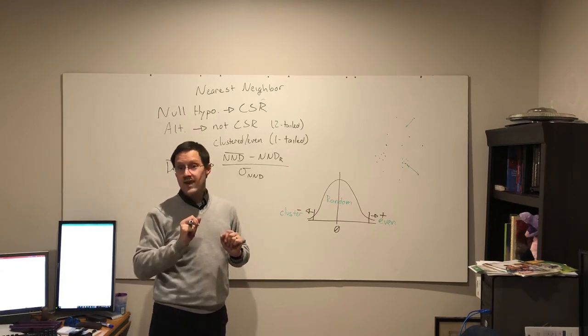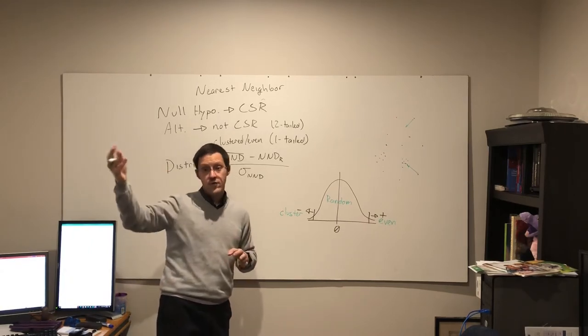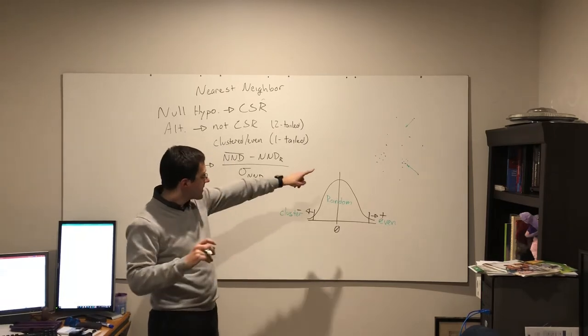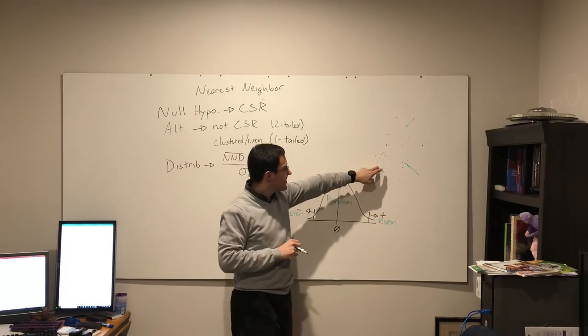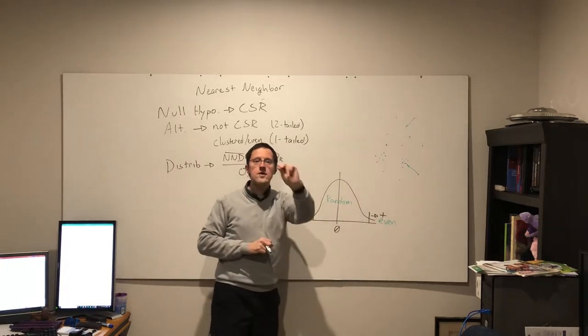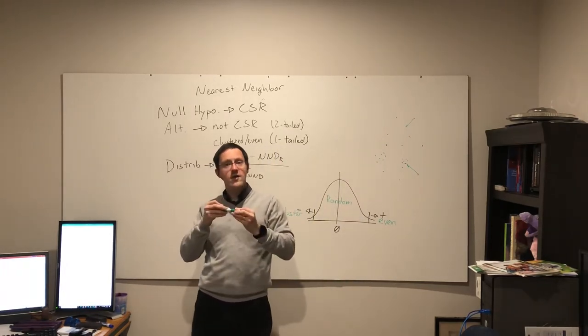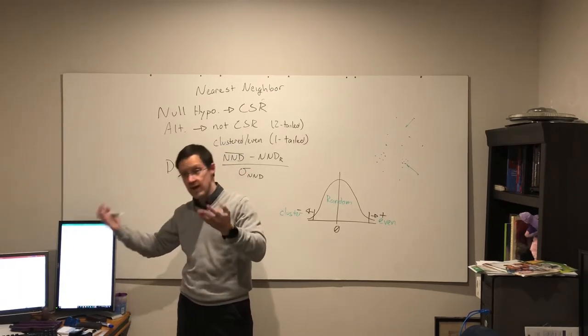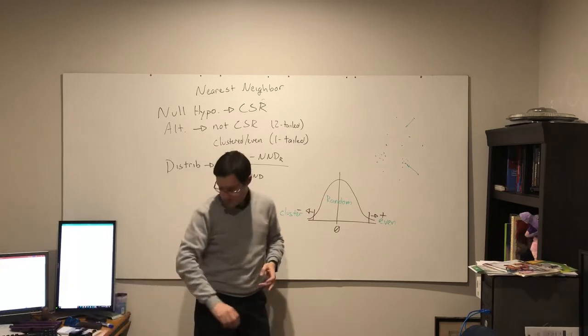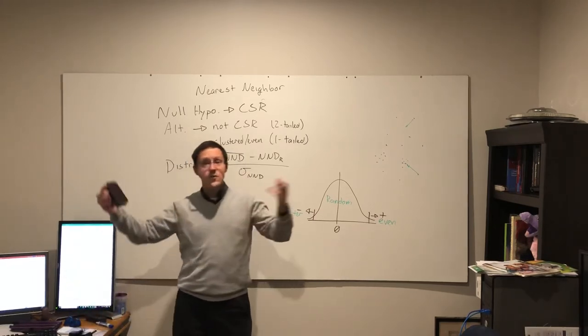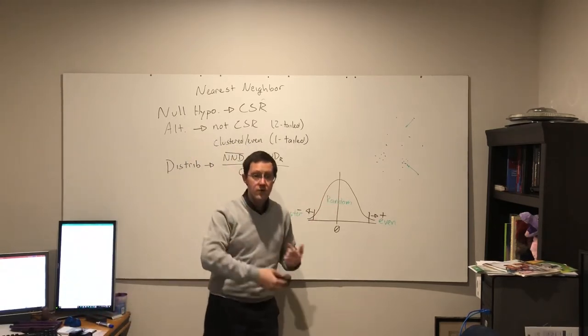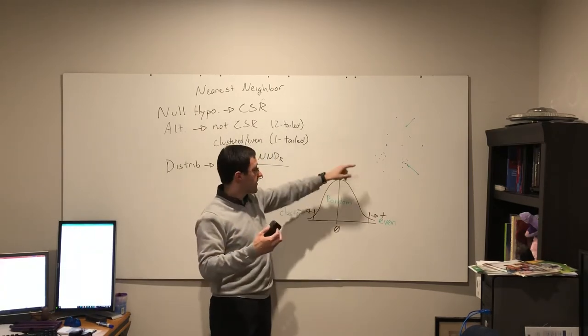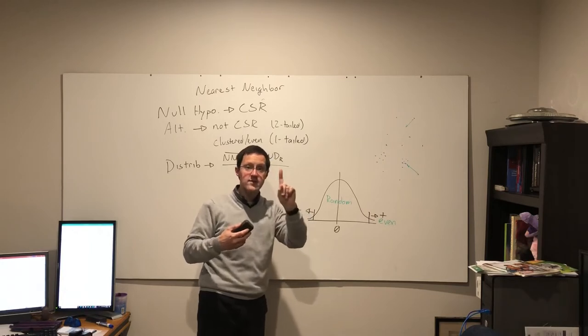Transitioning to Ripley's K, this was the recognition Dr. Ripley recognized that by only looking at the distance to the single nearest neighbor, there is a lot of information that we are ignoring, that is being excluded.